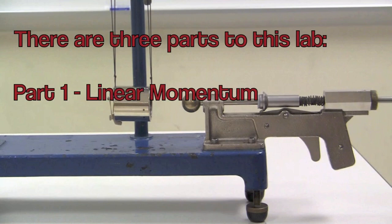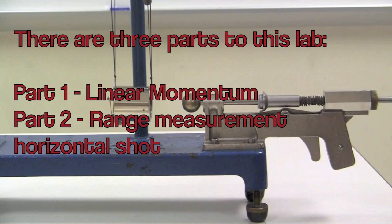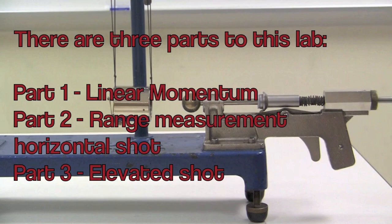This lab is divided into three sections. The first one deals with linear momentum and energy conservation. The second section is about range measurement of a horizontal shot, and the third one is about range measurement in an elevated shot.